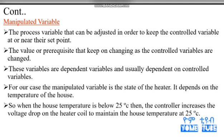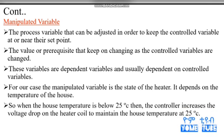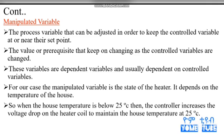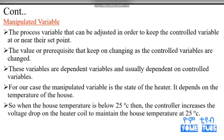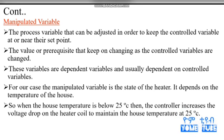Output temperature is dependent on the manipulated variable. For our case, the manipulated variable is the state of the heater. The heater state is the manipulated variable and depends on the temperature of the house. The temperature of the house is controlled by the heater state. When the house temperature is below 25 degrees C, then the controller increases the voltage drop on the heater coil to maintain the house temperature at 25 degrees C.